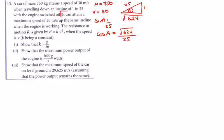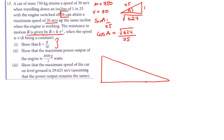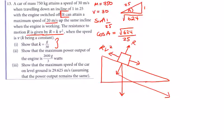The car can attain a speed of 20 m/s up the same incline when the engine is working. Resistance to motion is given by kv², where v is the speed and k is a constant. Part 1: show that k equals g/30. Starting with a diagram of the car going downhill: resistance kv² opposes motion up the slope, while weight components act down and perpendicular to the slope.